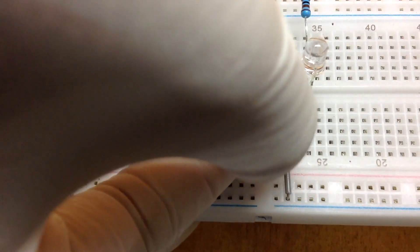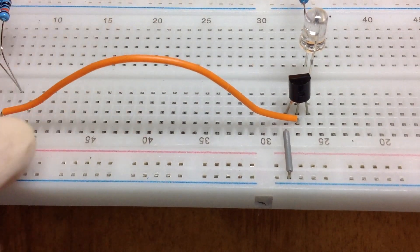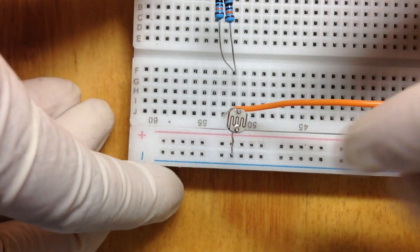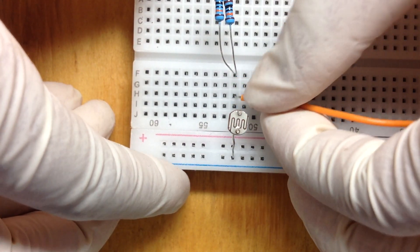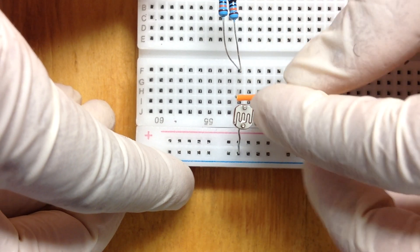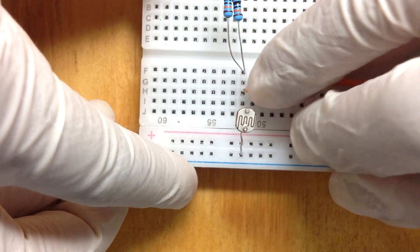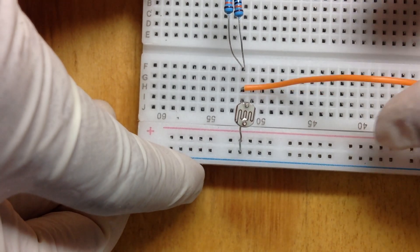LDR is a light-dependent resistor. A photoresistor, or light-dependent resistor, is a light-sensitive device. The resistance of the LDR decreases with the increase in light intensity.